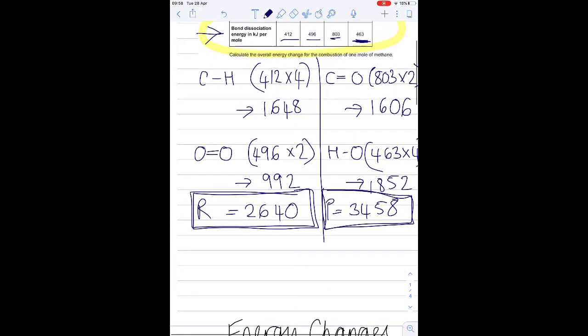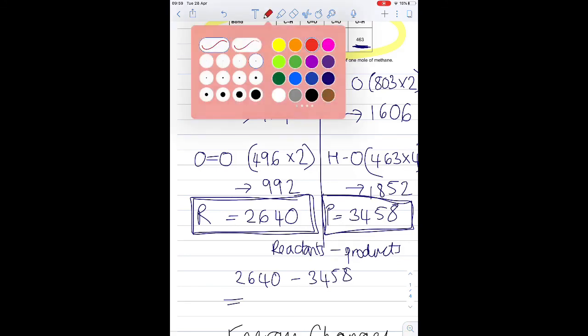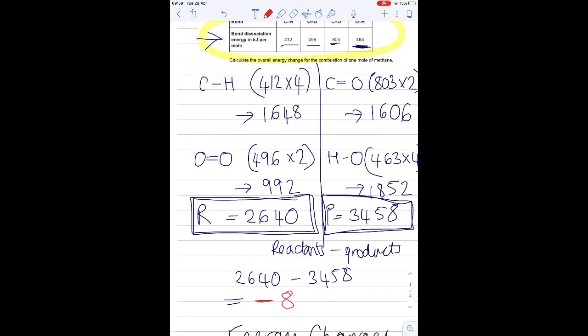Now what I'm going to do is my reactants take away my products - and you always do it this way. I'm doing 2640 take away 3458, and my answer is minus 818. That's kilojoules per mole. So it takes minus 818 kilojoules per mole for this reaction to take place. Because that's negative and I can see that my products release more energy, I know that energy from those products being made is not needed, so it is released into the surroundings. I can tell that this reaction is exothermic.